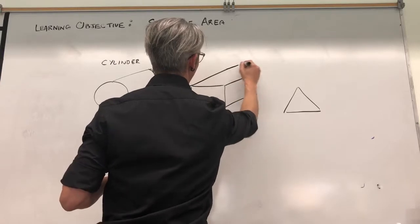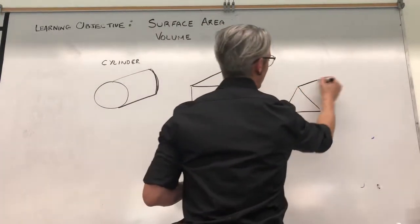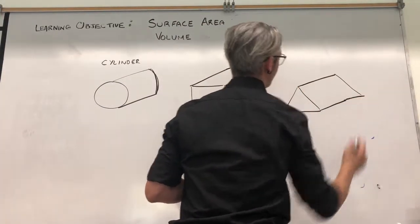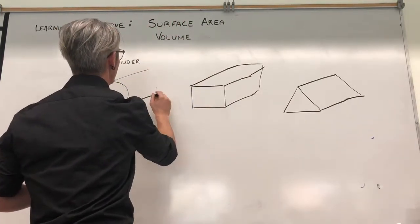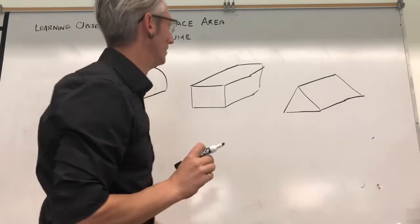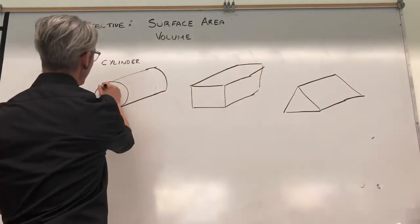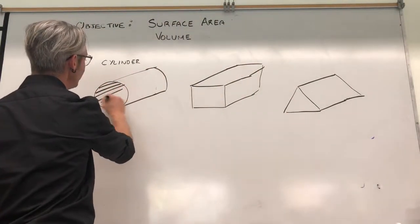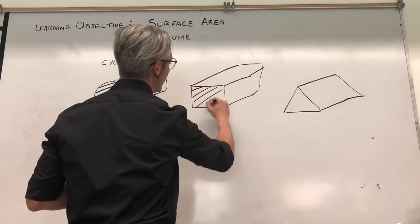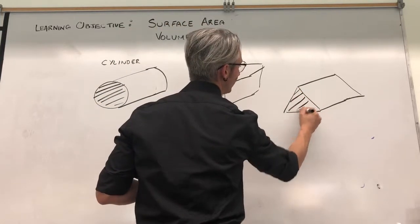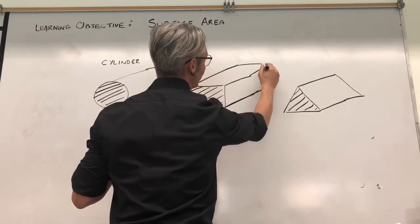Prisms have two real main dimensions we need to talk about. We have their face — the face or the base is the shape that the prism is based on. In the case of a cylinder it's a circle, in the case of a rectangular prism it's a rectangle, and in the case of a triangular prism it's a triangle. And then they have their length — the thing that makes them a prism.